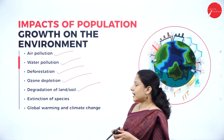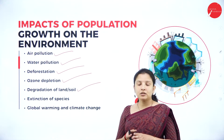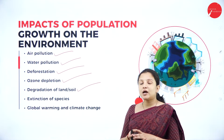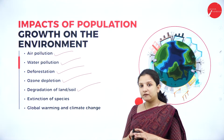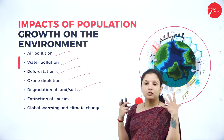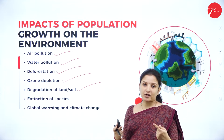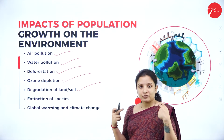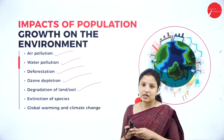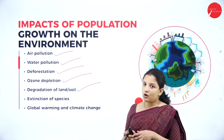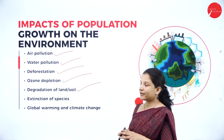Next is degradation of land or soil. When the population increases, the demand for agriculture and food also increases. People will start using a lot of chemical fertilizers in order to increase food production through crops. They start adding a lot of chemical fertilizers to the agricultural fields, which will degrade the soil. Therefore, degradation of land or soil can occur.